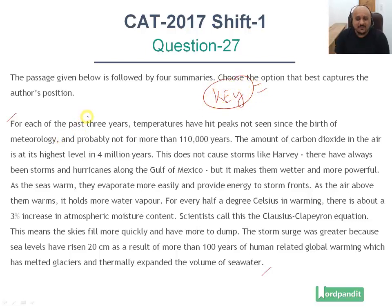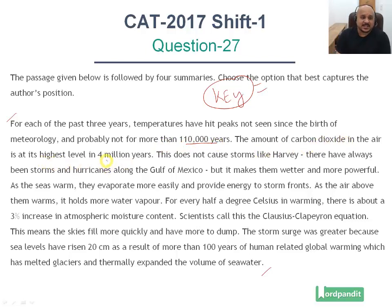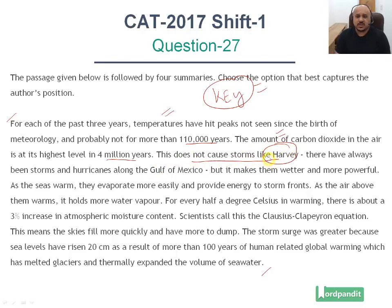For that, read the paragraph very carefully. Keep summarizing it while you read it. For each of the past three years, temperatures have hit peaks not seen since the birth of meteorology, and probably not for more than 1,10,000 years. The amount of CO2 in the air is at its highest in 4 million years. So global temperatures have hit peaks not seen in 1,10,000 years, and CO2 is at an all-time high. This does not cause storms like Harvey — there have always been storms and hurricanes along the Gulf of Mexico — but it makes them wetter and more powerful, adding more energy to them.